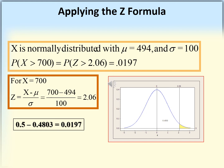For the same distribution, to find P(X > 700): z = (700 - 494) / 100 = 2.06. So P(X > 700) = P(Z > 2.06). This equals P(Z > 0) minus P(0 < Z < 2.06) = 0.5 - 0.4803 = 0.0197.